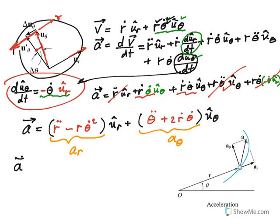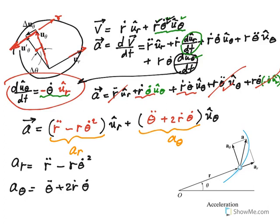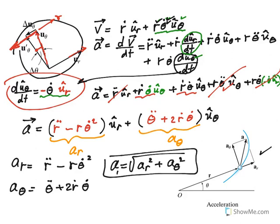The radial component of acceleration is a_R equals R-double-dot minus R theta-dot squared. The transverse component is a_theta equals R theta-double-dot plus 2 R-dot theta-dot. If R and theta are given as functions of time, just take derivatives once or twice and plug in the time. If R is given as a function of theta, use the chain rule. The magnitude of acceleration is the square root of a_R squared plus a_theta squared.